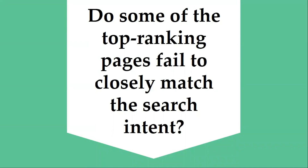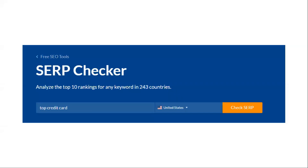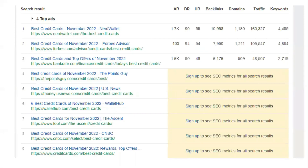Let's start with search intent. The first thing you need to do is look at the SERP and ask yourself: do some of the top ranking pages fail to closely match search intent? To find this out, you can go through the three C's of search intent, which we already discussed in lesson two of this module. Here we are searching for 'top credit card' and by the looks of it, they are all listicle blog posts using the freshness angle, so they do match the search intent. Pay close attention to the titles and URLs of the ranking pages because that gives you an indication.